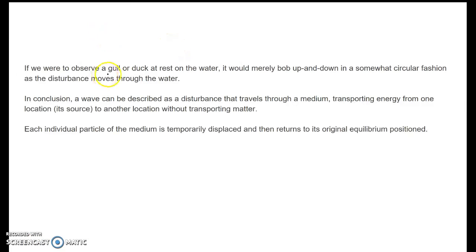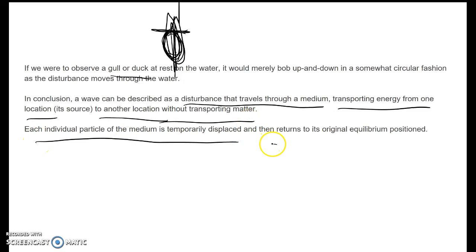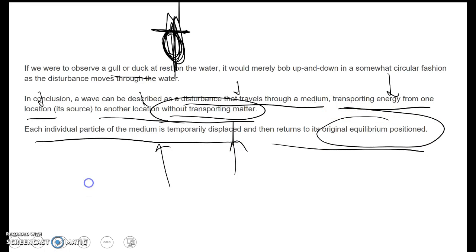Think about something on a water wave — a duck, a gull, or a boat. It bobs up and down, because the circular motion is the disturbance in the water; the particle moves in a circle and the object on top goes up and down with it. In conclusion, a wave is a disturbance that travels through a medium, transporting energy from one location to another without transporting matter. The particles are temporarily displaced and then return to equilibrium position. The medium is displaced, but always returns to its original equilibrium position.